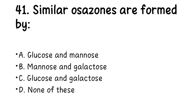Number 41. Similar osazone crystals are formed by: A. Glucose and mannose, B. Mannose and galactose, C. Glucose and galactose, D. None of these. The right answer here is A, glucose and mannose.